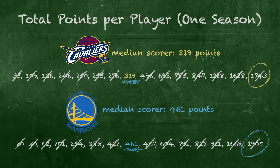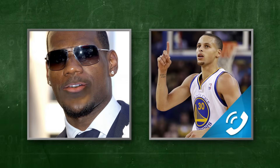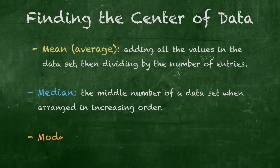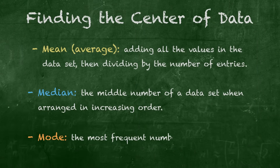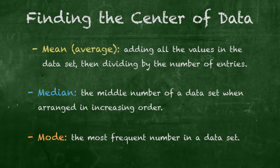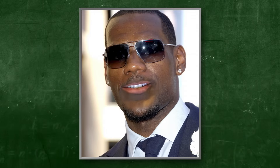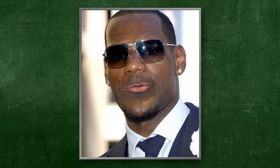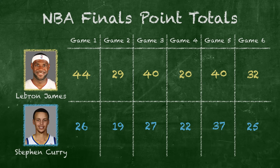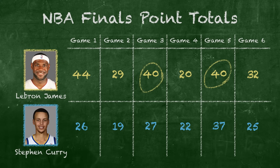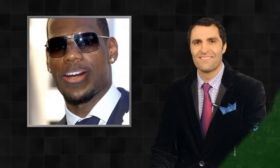That's all well and good, Steph. But I want to shift gears here and talk a little bit about the mode. Mode being the number that occurs most frequently in a data set — mode as in consistency. Mode as in 40 points a game, baby. Let's go to our point totals for the NBA Finals, if we could. As you can see, there's a peak surrounding my 40-point performance. Because I scored 40 points in two of the six games we played.